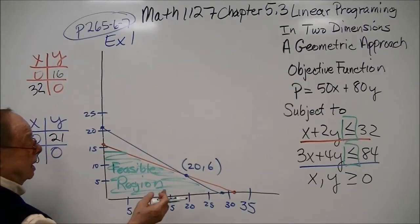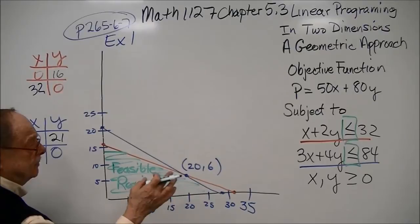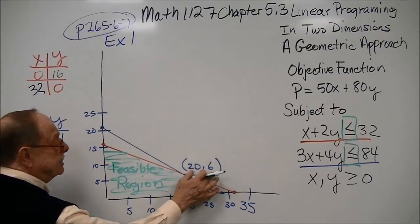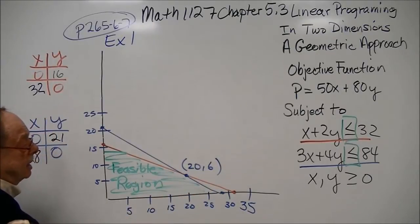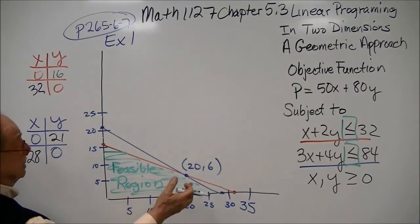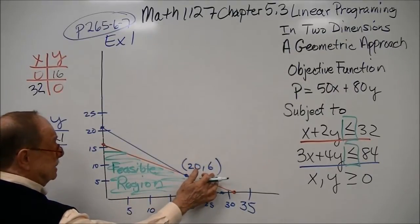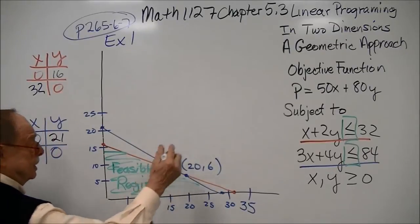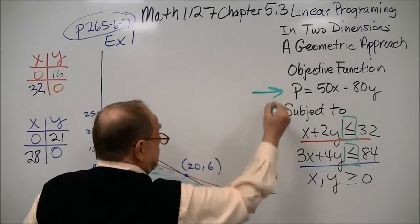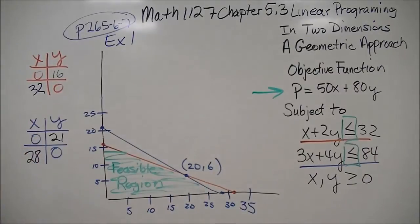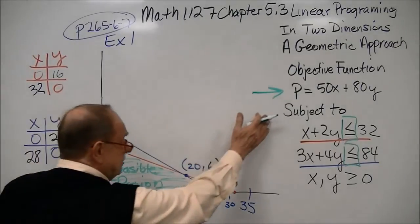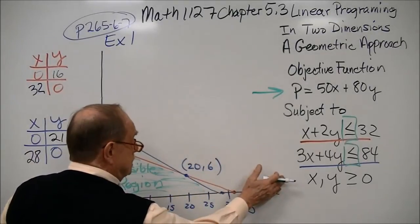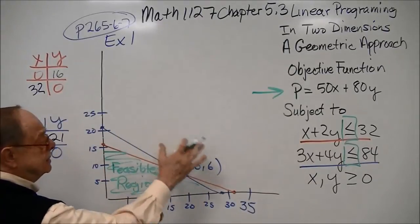Keep in mind our optimal production would be 20 of x, which we said were the standard tents, and six of the other style tent. But I'm going to come back to this with showing you this in terms of what that is. That's your objective function.